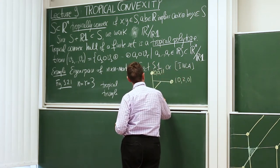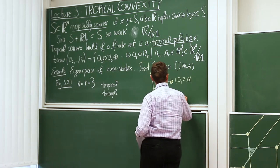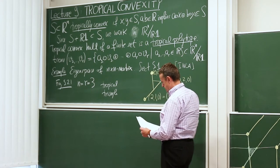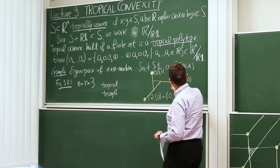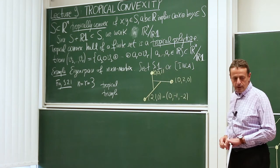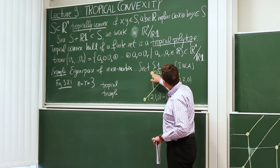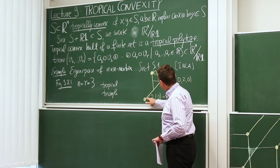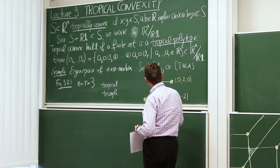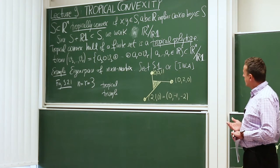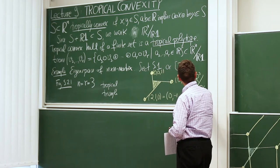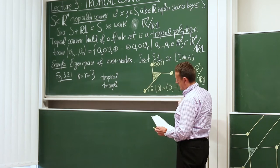So in the plane we have the point 0, 1; the point 2, 0; and the point negative 1, negative 2. The convex hull between two of these points is a bent segment. Continuing to take convex hulls fills out a triangle. This is a typical picture of a tropical triangle in the plane, drawn in R2 which is R3 mod R1, with the normalization that the first coordinate is always zero.